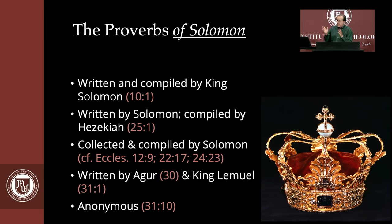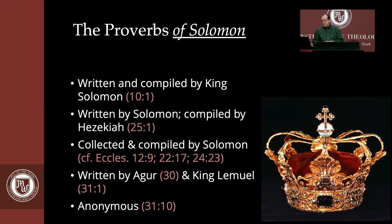Proverbs 22 is really saying: if you will train up a child according to his own way — that is, educate him in keeping with his own gifts and skills — then when he's old he'll still be doing that because it's who he is. But even if you interpret it the traditional way, it's in Proverbs. It's normally true, but it's not a guarantee. So be careful in how you handle the Proverbs. The authors include Solomon, who wrote and compiled many; others written by Solomon and later compiled by King Hezekiah; and Proverbs 30 written by Agur and chapter 31 by King Lemuel, with an anonymous poem at the end.